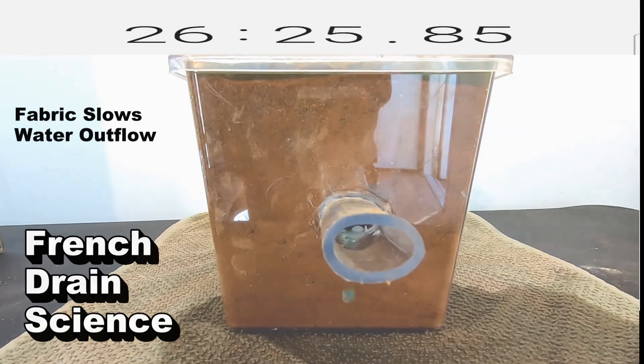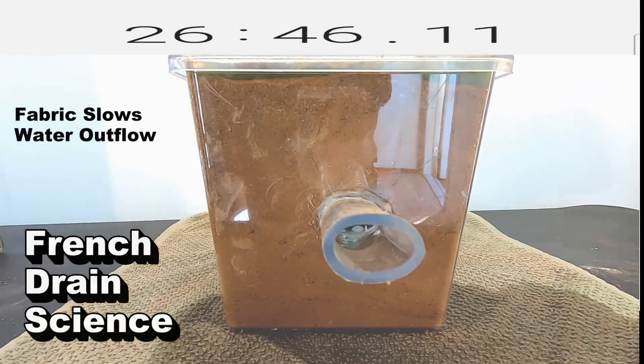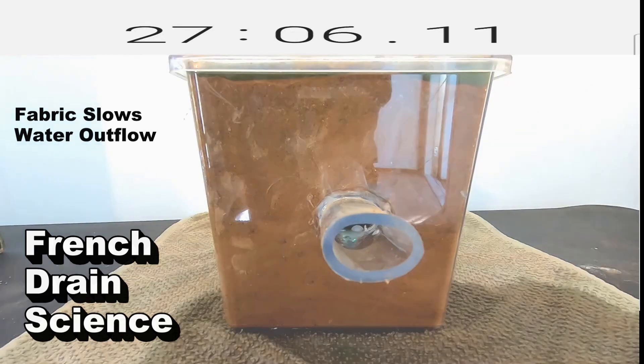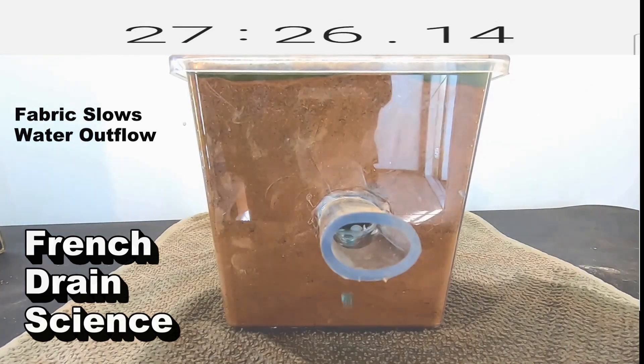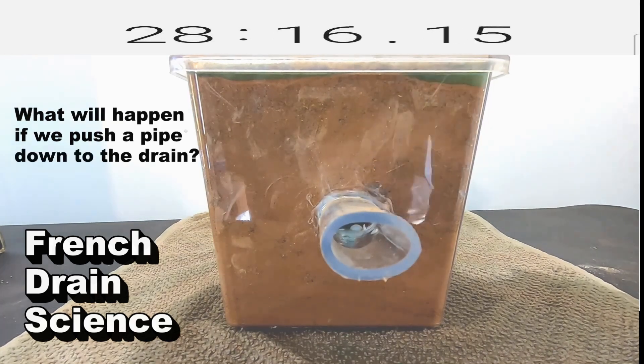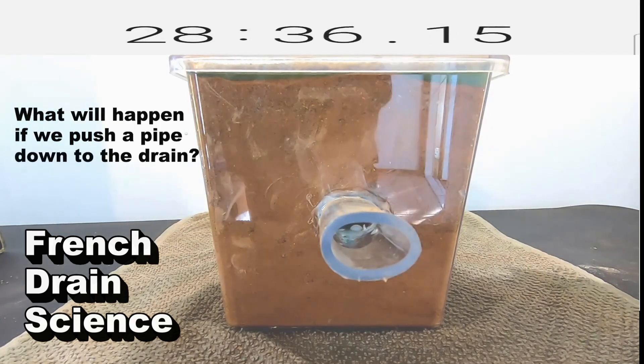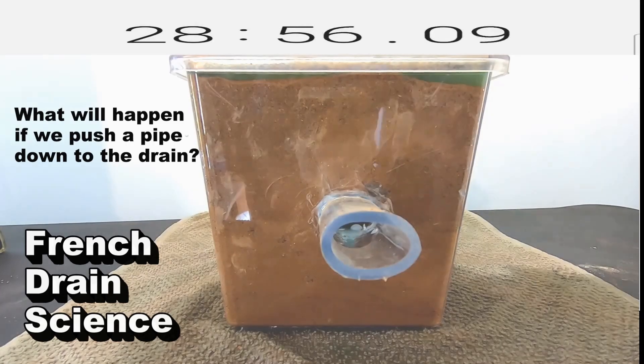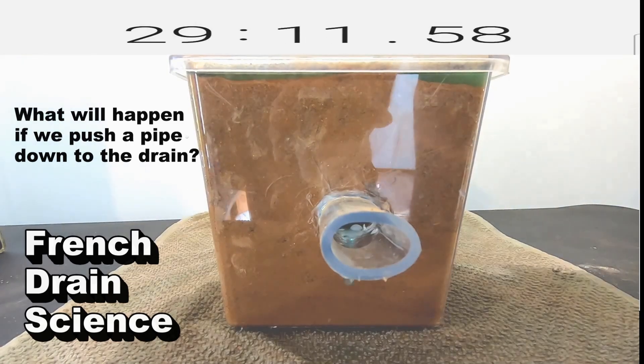The fabric really slows down the outflow of water. It's draining and you can still see at the top the surface water, you see that corner? Still there. Still there.